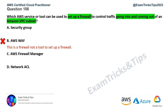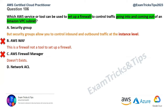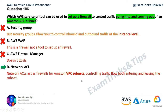Option C looks like a correct answer, like a firewall manager, but something like that doesn't exist, so option C is wrong as well. That leaves us with security group and network ACL. Security group controls traffic inbound and outbound at the instance level, whereas network ACL controls traffic at the VPC subnet level for both entering and leaving. So the correct answer for VPC subnet is option D, network ACL.